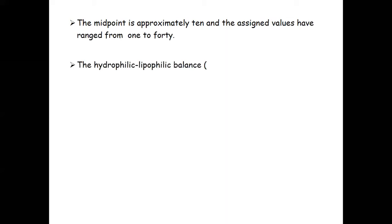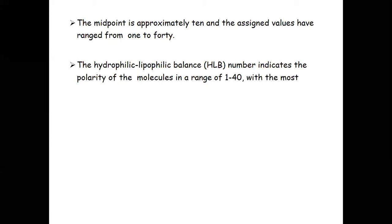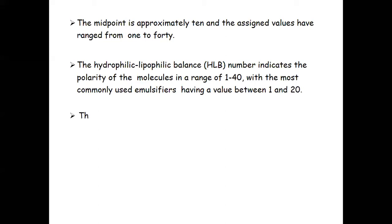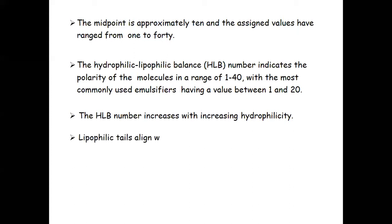The hydrophilic-lipophilic balance number indicates the polarity of molecules in a range of 1 to 40, with the most commonly used emulsifiers having a value between 1 to 20. The HLB number increases with increasing hydrophilicity. If your surfactant has a low HLB number, it is lipophilic — the lipophilic tail aligns with oil and the hydrophilic head aligns with water.